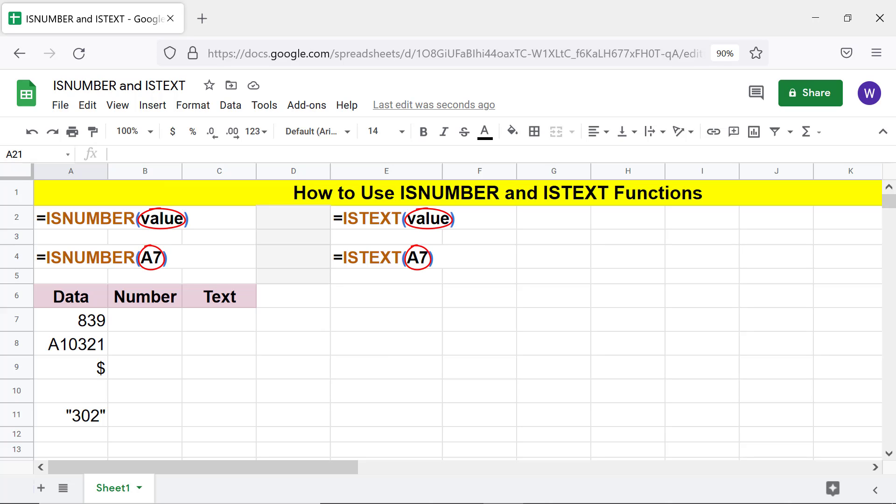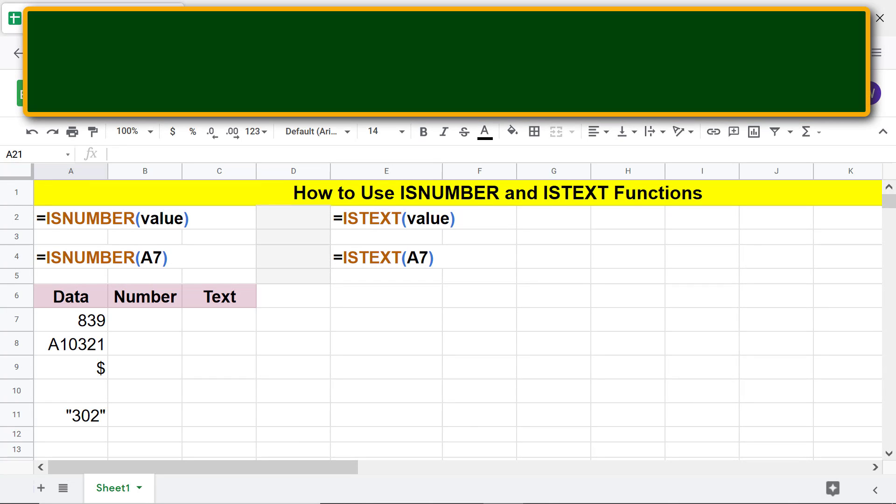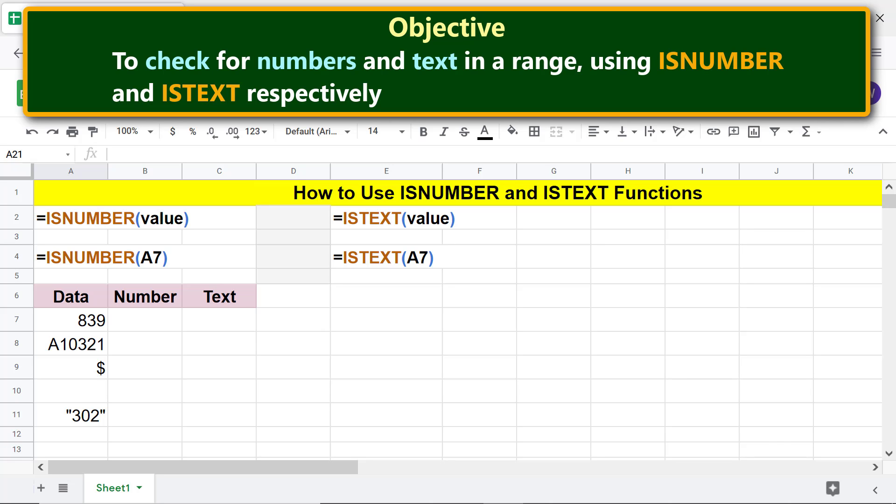Value can be, for example, a cell reference or a function. Moving forward, here is the objective: to check for numbers and text in a range using ISNUMBER and ISTEXT respectively.